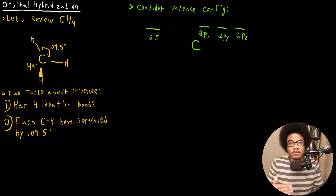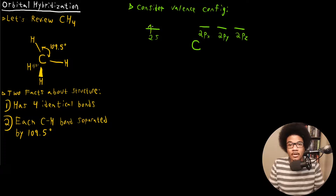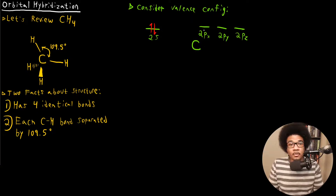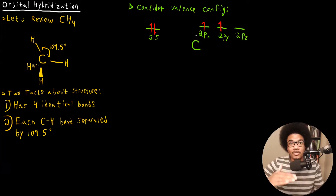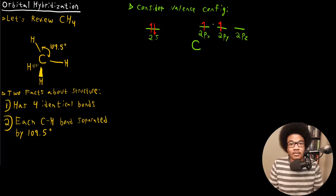Obviously there is a 1S, but I'm only showing the valence configuration for carbon. Carbon will have two electrons in the 2S. The other two are going to go in two separate 2P orbitals. Remember the rule from a previous course: to have the lowest energy electron configuration, you want to maximize the number of unpaired electrons. That's why each electron goes in a separate 2P orbital rather than being paired up in one.